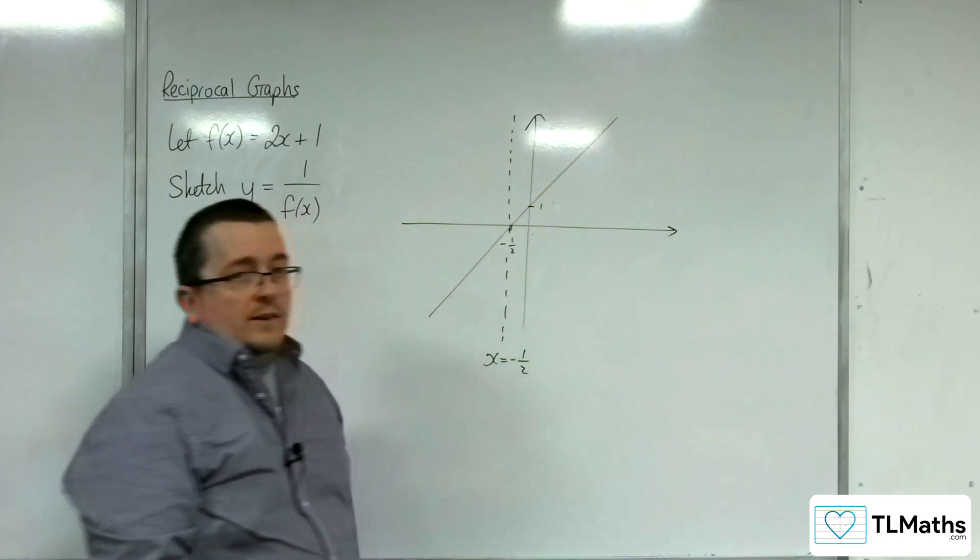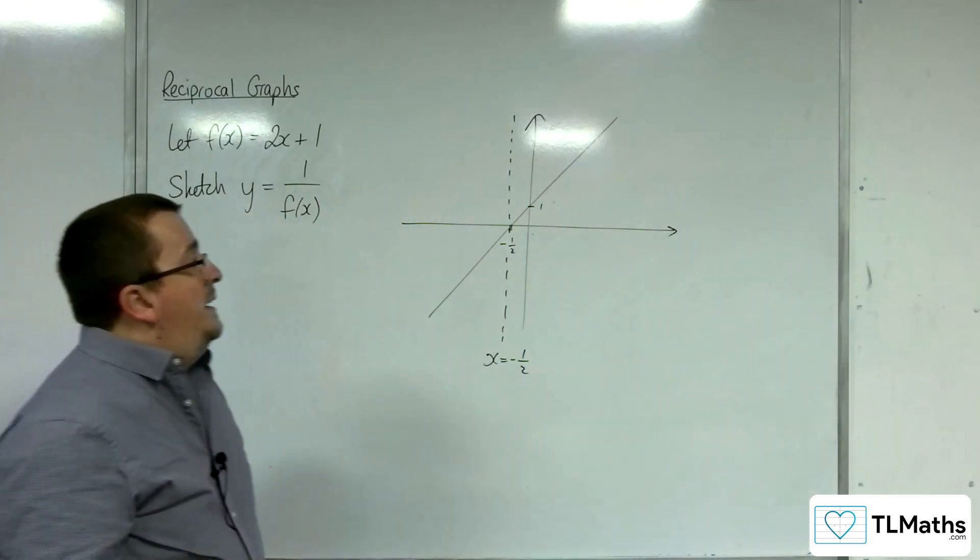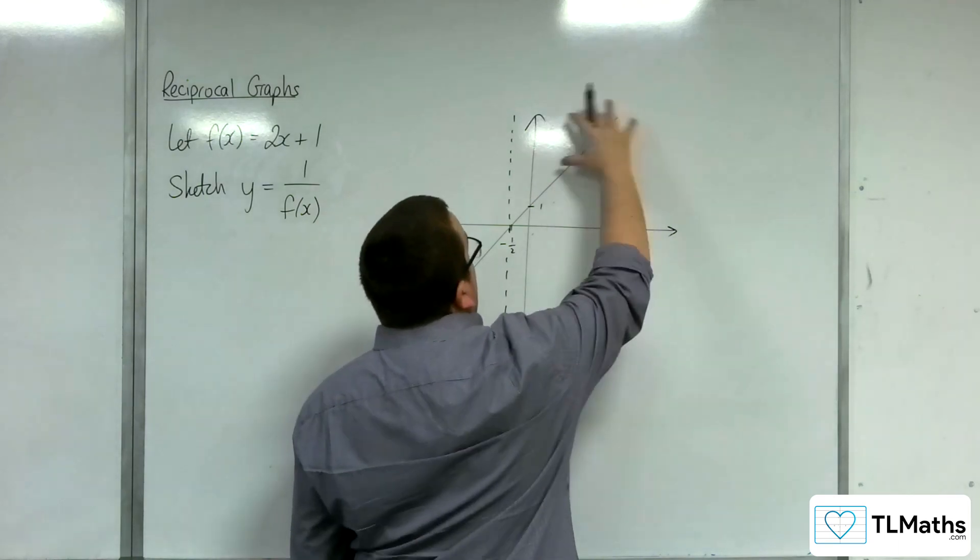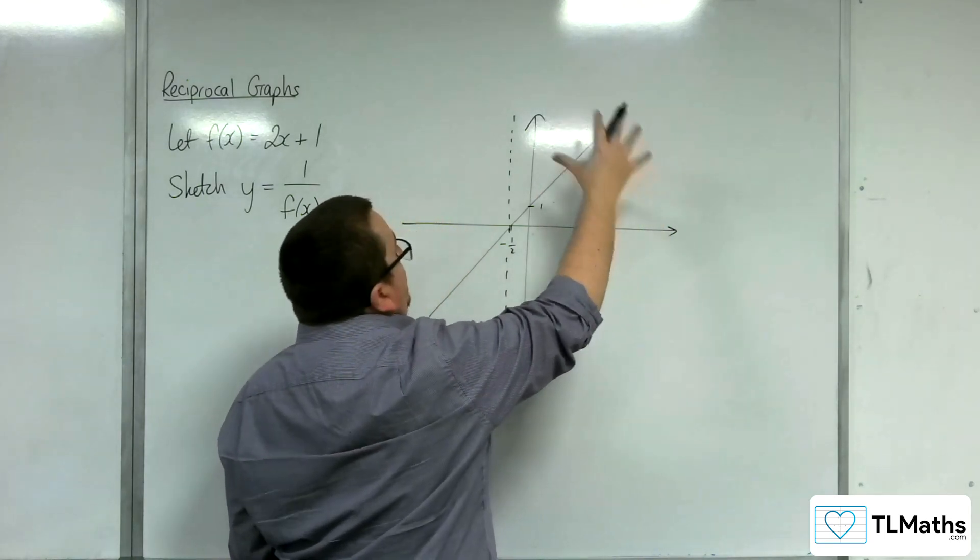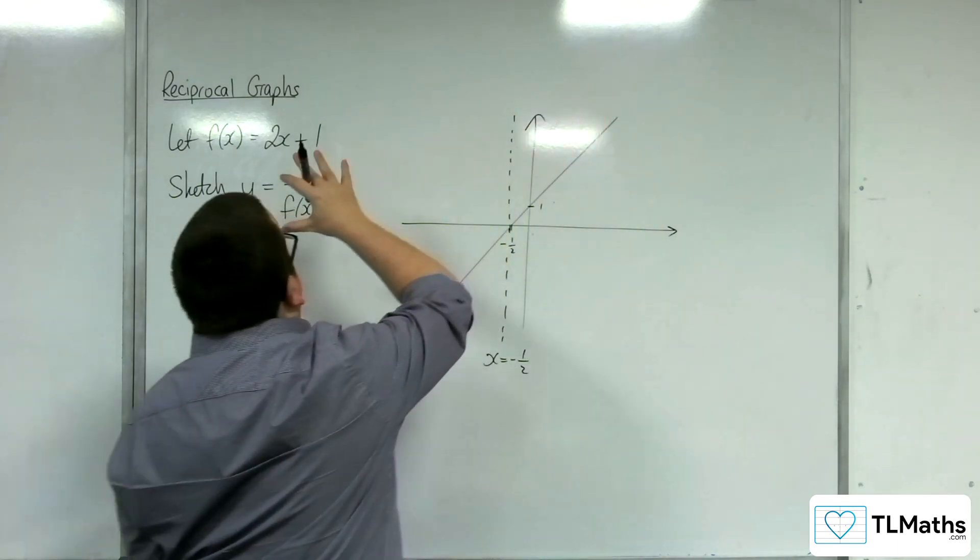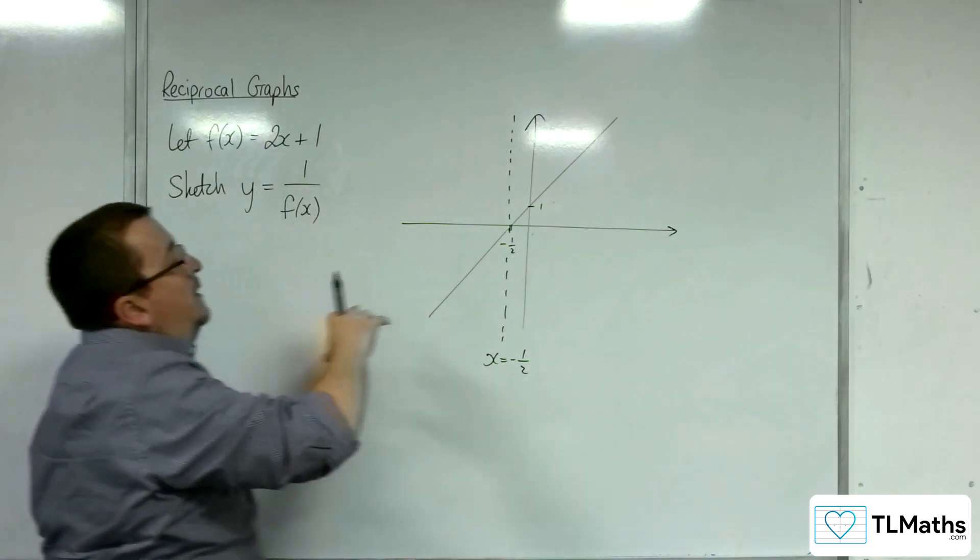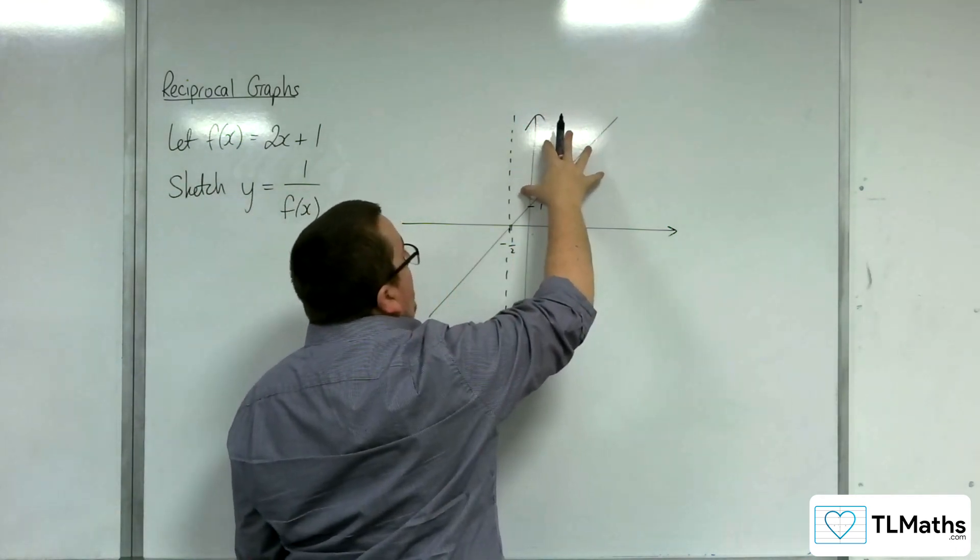So that means that 1 over a positive value will be positive. So I know that my y equals 1 over f(x) will be above the x-axis here.